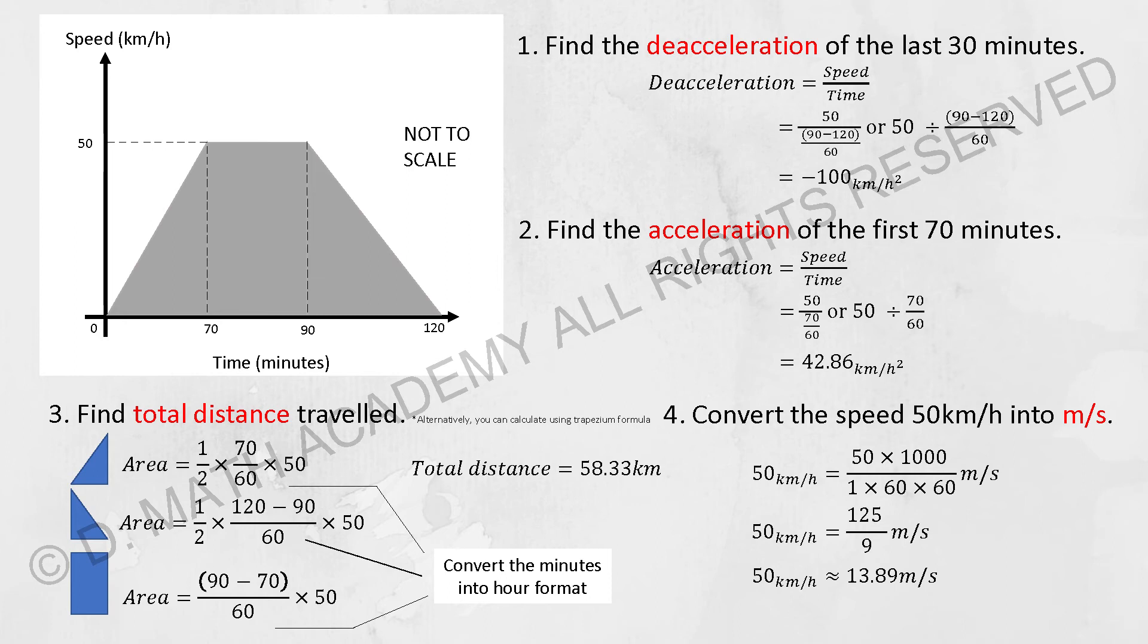Same thing - all you need to do is take the speed and divide by the time taken. Things to take note: the unit for speed is kilometers per hour, but for time you only have minutes. You're required to run the conversion. Change the time into hours. After the calculation, you should get negative 100 kilometers per hour squared.